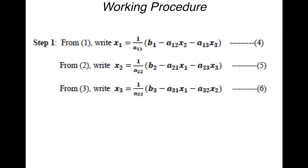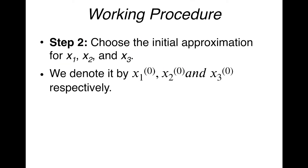After this, we make an initial guess for x1, x2, and x3, known as the initial approximation, denoted by x1⁰, x2⁰, and x3⁰. If it is not given in the question, you can take the initial approximation as 0, 0, 0 or 1, 1, 1 or any value of your choice. Taking 0, 0, 0 will be easiest for calculation.